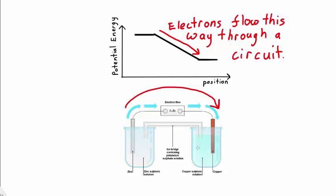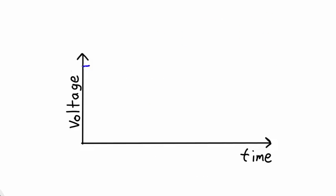We could represent this as a plot of voltage against time. So we start out with an almost constant voltage so electrons are flowing from the zinc into the copper.